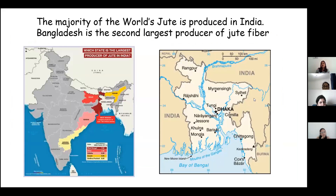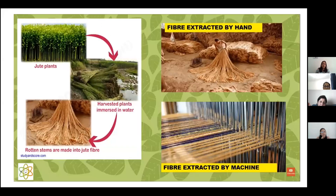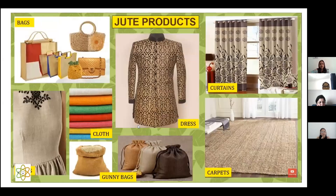Which country is the world's largest producer of jute fiber? It's India — specifically West Bengal. The second country is Bangladesh. From jute plants, they are put in water to separate the fiber in the retting process, and from the retted stems the fibers are extracted, by hand or machine.